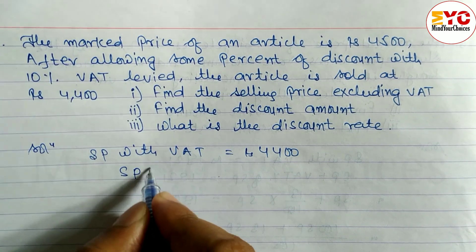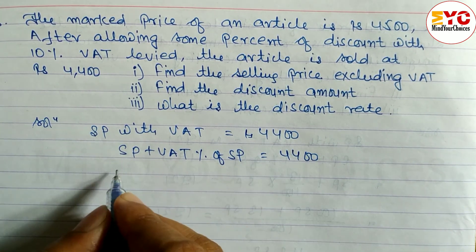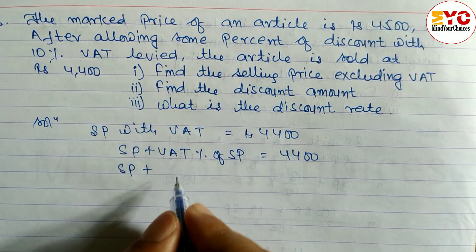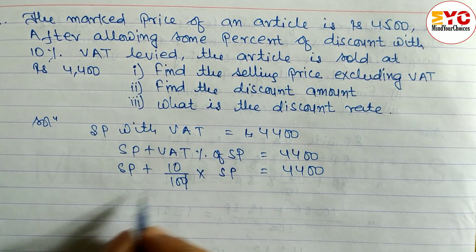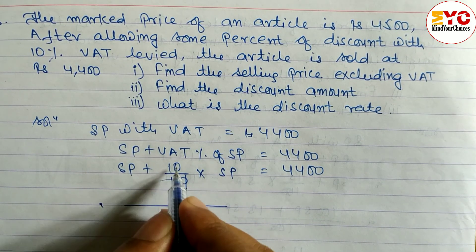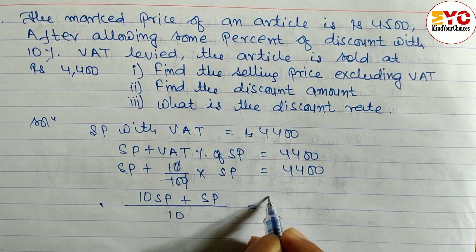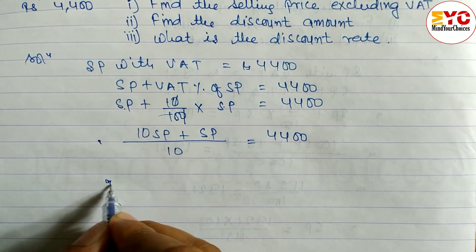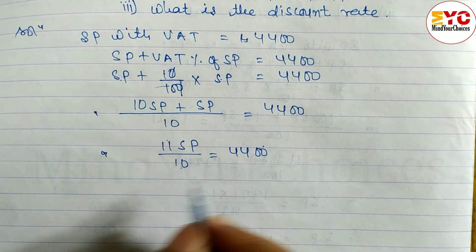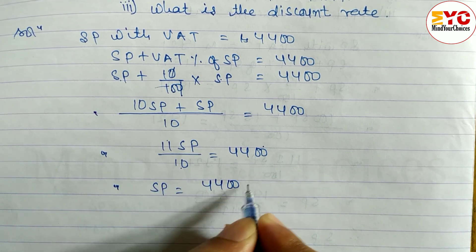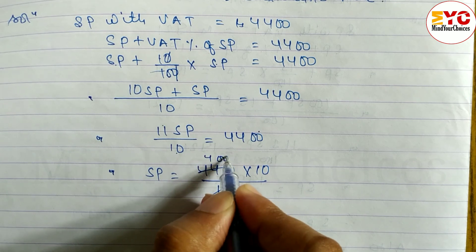Using the SP with VAT formula: SP + VAT% of SP = 4400. VAT percent = 10%, so SP + 10/100 × SP = 4400. Taking LCM of 10: 10SP + SP = 4400, so 11SP / 10 = 4400. Cross multiplying: SP = 4400 × 10 / 11 = 4000. Therefore, selling price = Rs. 4000.